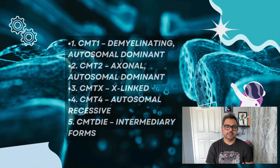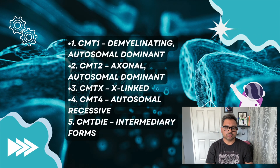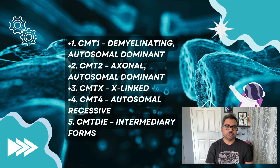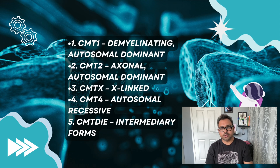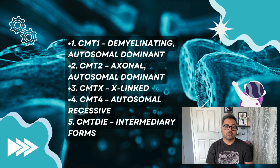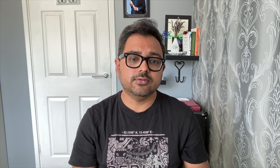There are five varieties of Charcot-Marie-Tooth Disease. CMT1 is associated with demyelination and is autosomal dominant. CMT2 is associated with axonal degeneration and is also autosomal dominant. The third variety is X-linked, known as CMTX. CMT4 is autosomal recessive, and the fifth form, CMT-DI, is an intermediate form.